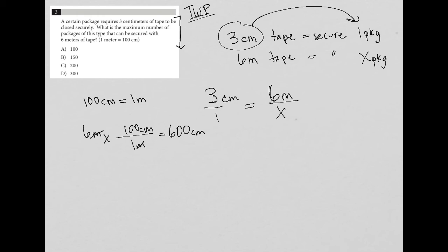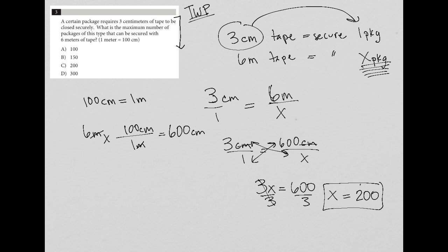So then I am going to rewrite this as 3 centimeters over 1 is equal to 600 centimeters over X. Now I can solve the proportion by cross multiplication, which basically just becomes 3X equals 600. At this point, the units aren't necessary because they're the same on both sides. Divide this by 3, and what I find out is that X, which again is the number of packages, is equal to 600 divided by 3, which is 200. So we can get 200 packages with six meters of tape.